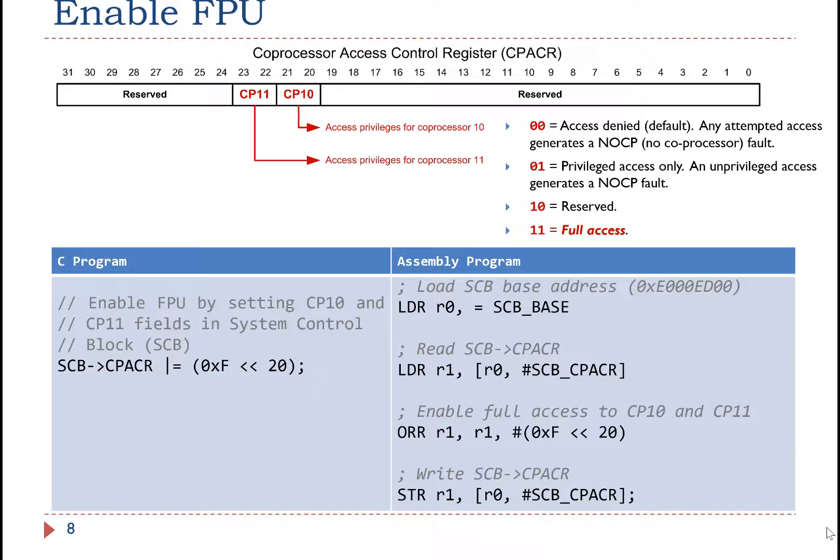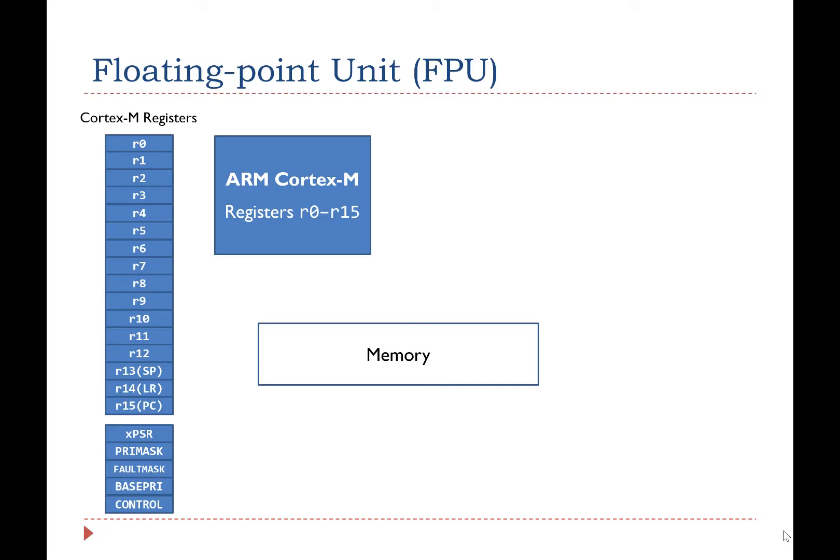Now let's look at how FPU operates. This is the Cortex-M core, and it has 13 general purpose registers named from R0 to R12, stack pointer, link register, program counter, and a few special purpose registers. The processor core uses LDR and pop instructions to read the memory, and STR and push instructions to write to the memory.